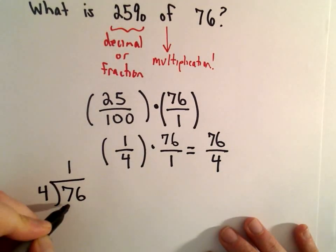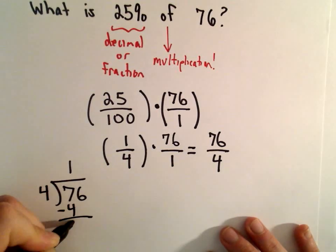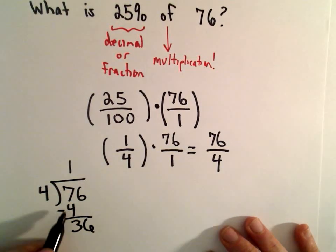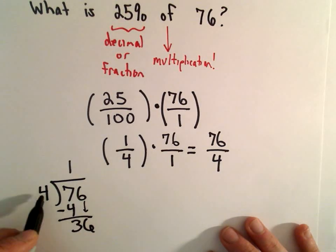4 will go into 7 once. 1 times 4 is 4. Drop down. Subtract. We'll get our 3 and drop down our 6. And then 4 will go into 36 9 times.